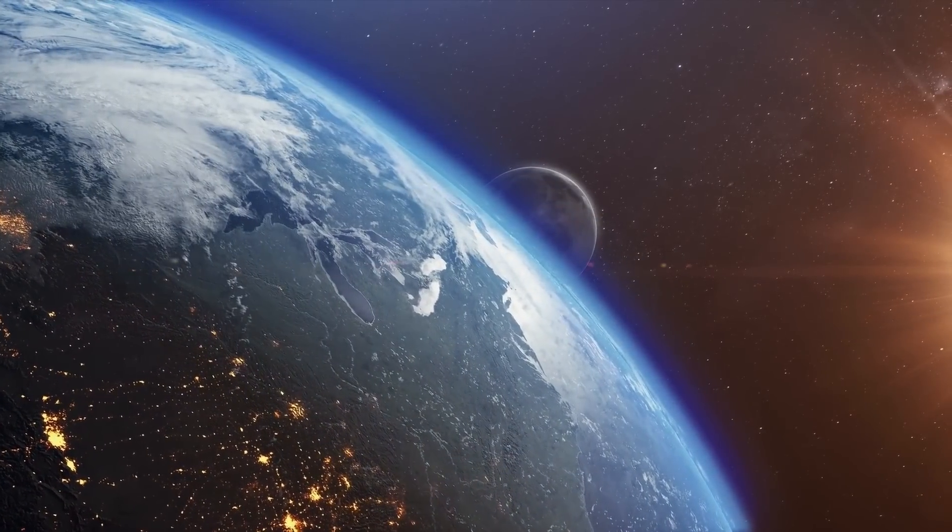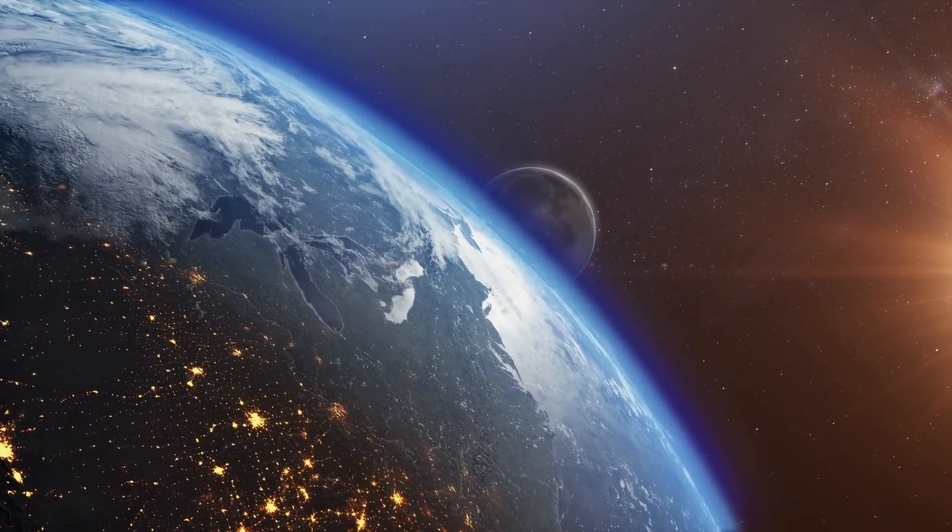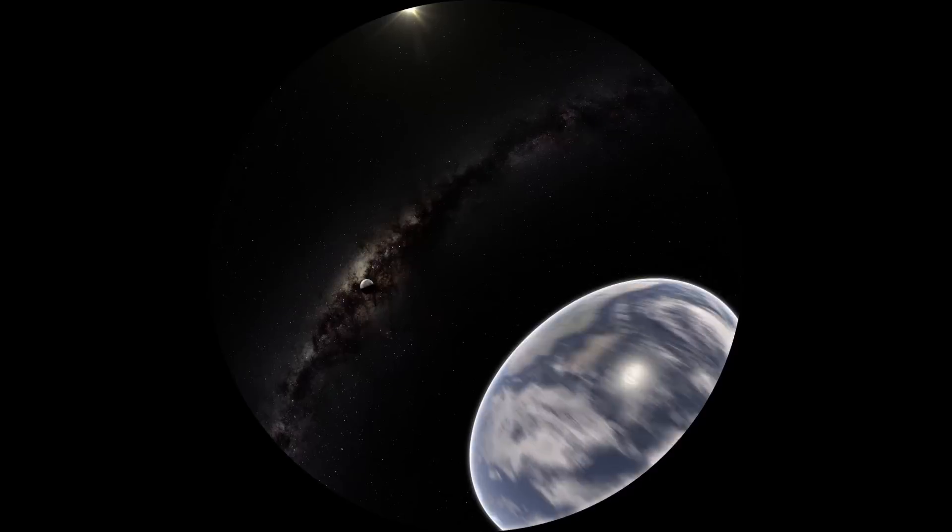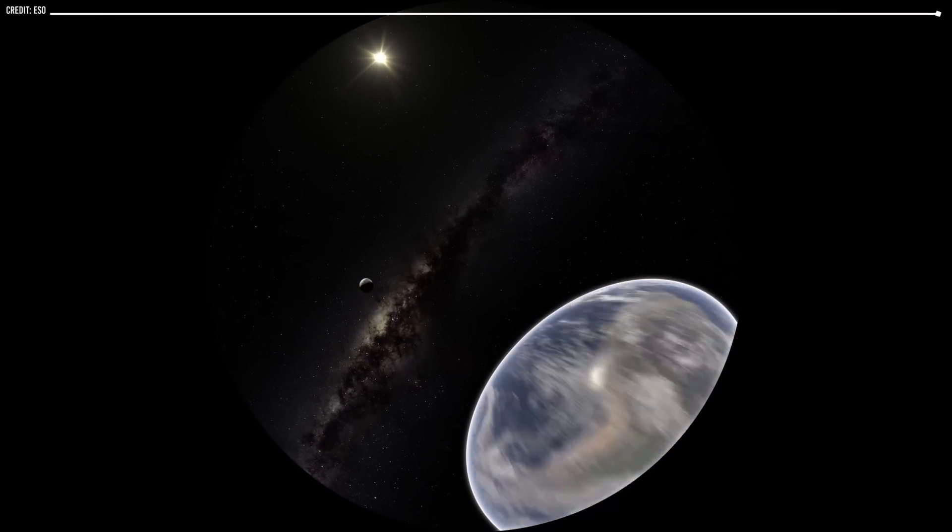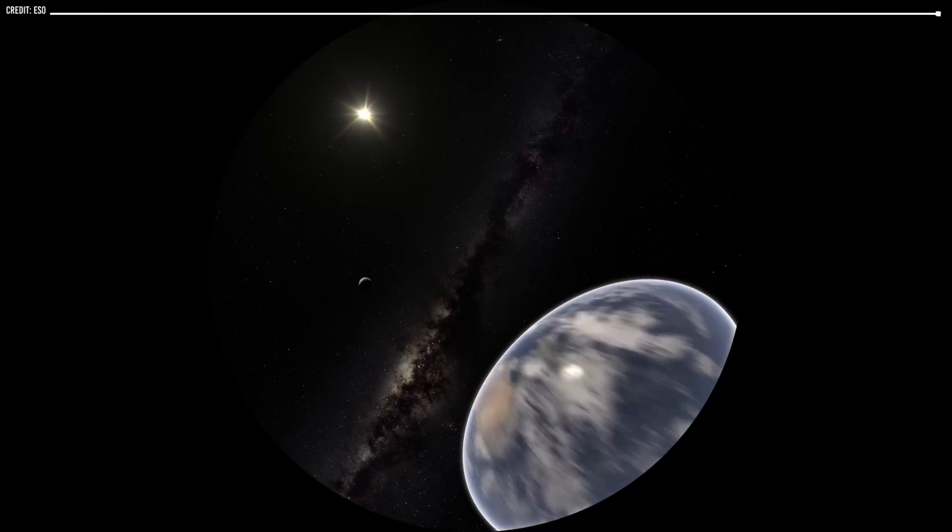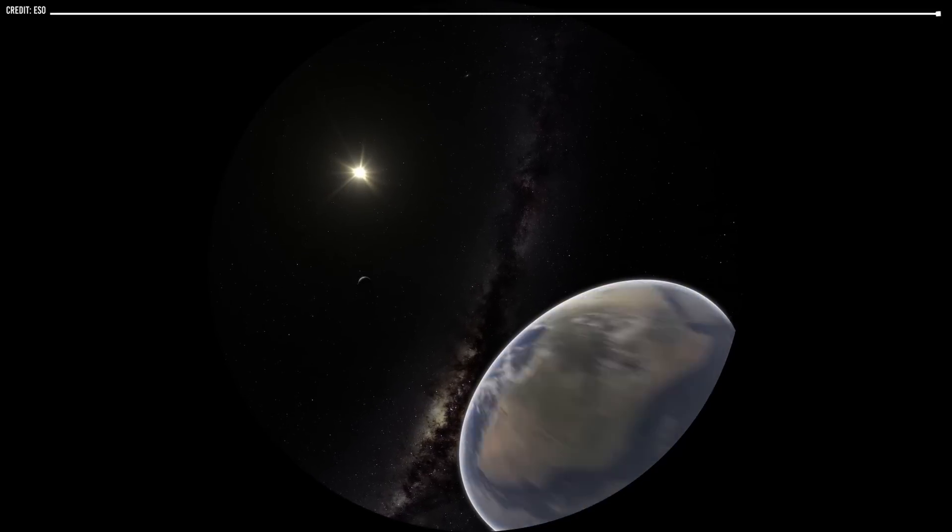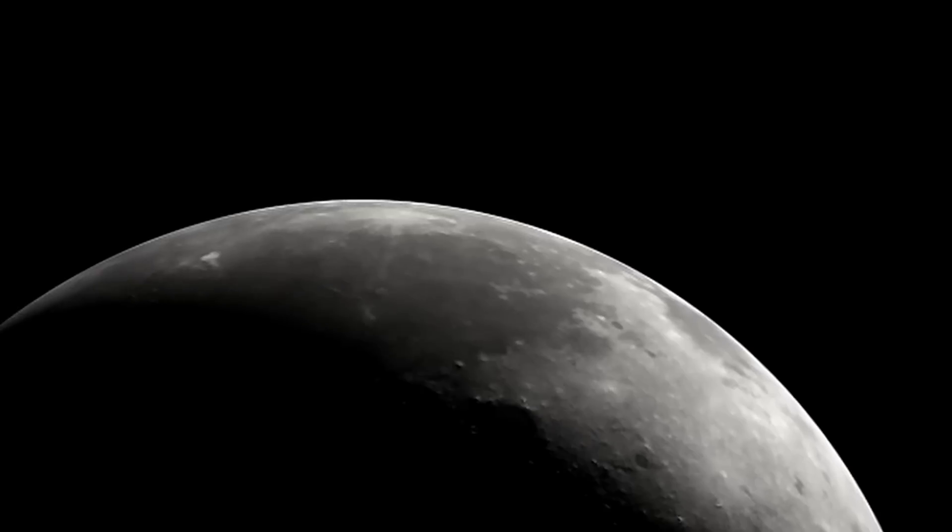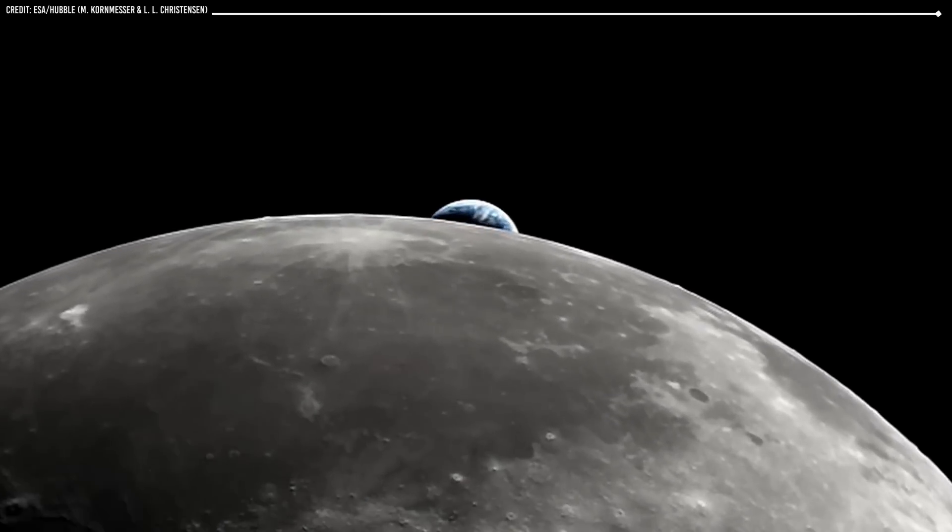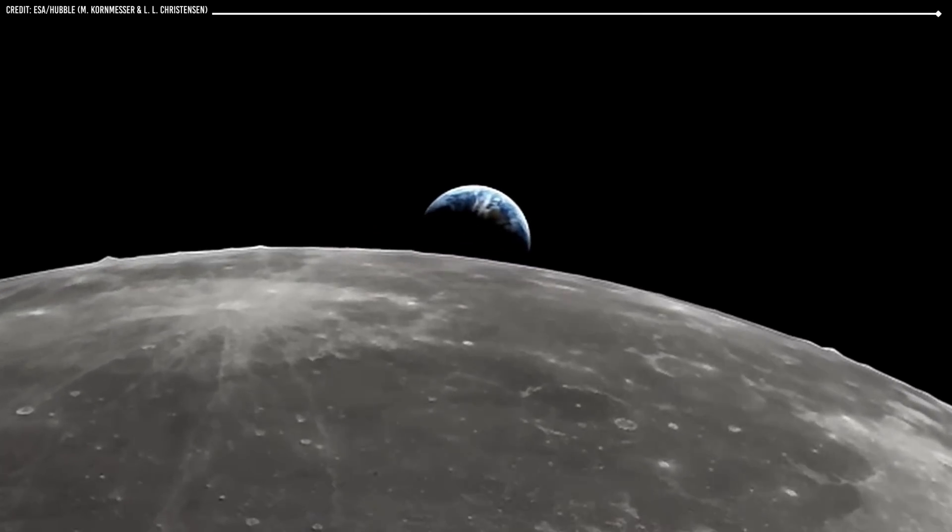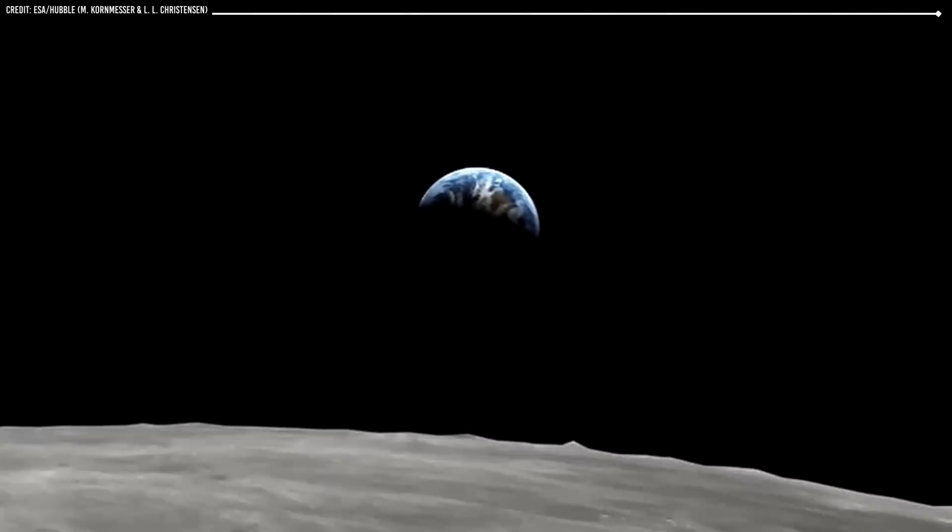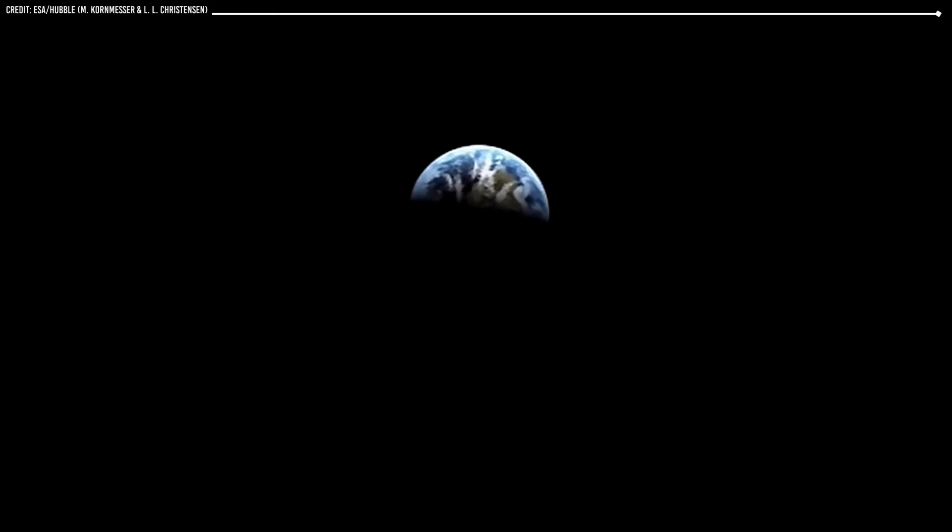Another important factor that has contributed to Earth's ability to support life is its large moon. The moon's gravitational pull helps to stabilize Earth's rotation, which in turn helps to stabilize the planet's climate. Additionally, the moon's gravitational pull creates tides, which have played a role in the evolution of life on Earth by creating a diverse range of habitats for marine organisms.